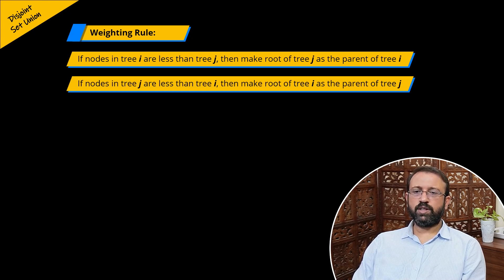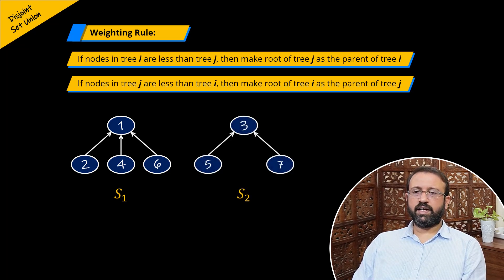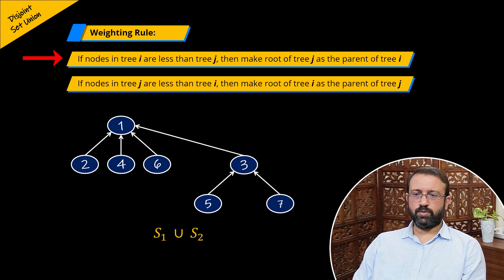To demonstrate the union operation using the weighting rule, we will consider two disjoint sets: the disjoint set S1 with element 1 as the root and elements 2, 4 and 6 as its children. Let us look at the union operation on disjoint sets S1 and S2 using the weighting rule. The tree S1 has 4 nodes and the tree S2 has 3 nodes. Since the number of nodes in tree S1 is more than in tree S2, we make the root of tree S1 as the parent of tree S2. This is how the union operation using the weighting rule is performed.